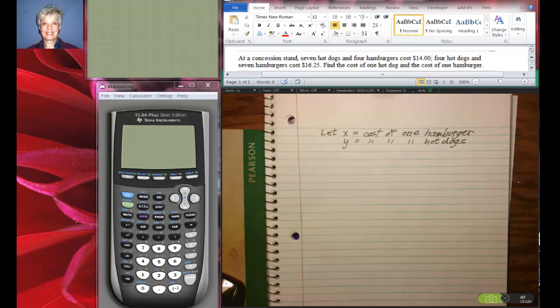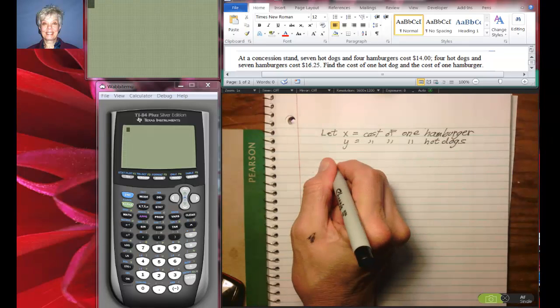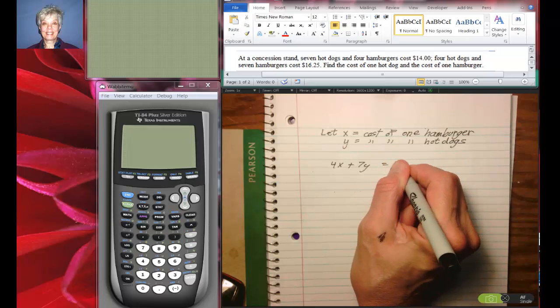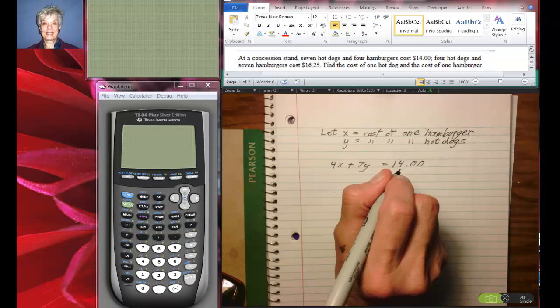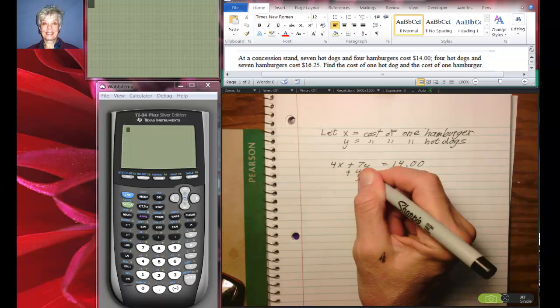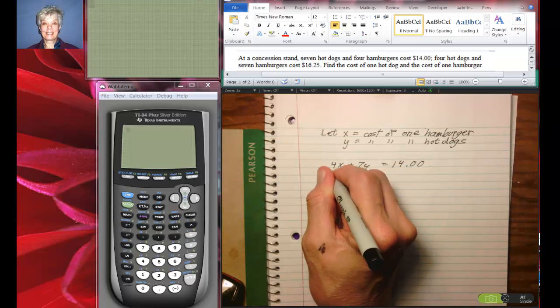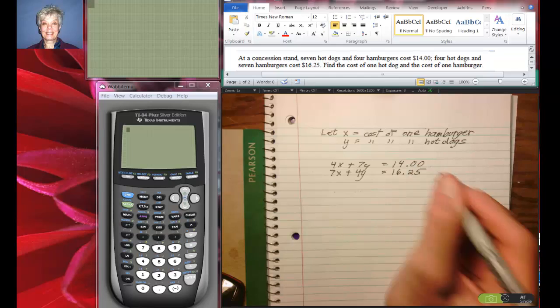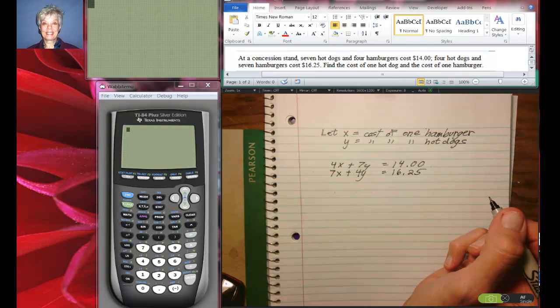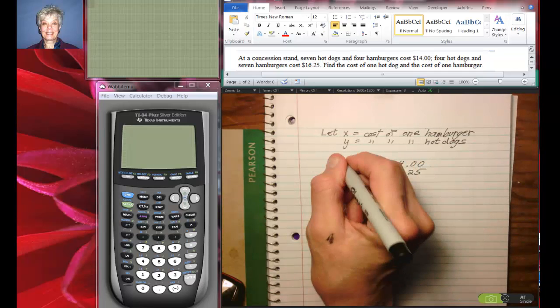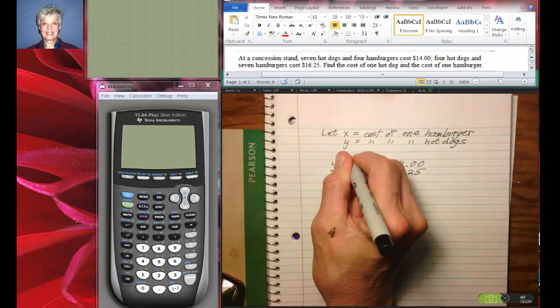Alright, the first half of the first sentence says that seven hot dogs and four hamburgers, so that's going to be 4x plus 7y equals $14.00. And four hot dogs plus 7 hamburgers cost $16.25. Okay, now I have to remember that these are the hot dogs and these are the hamburgers.